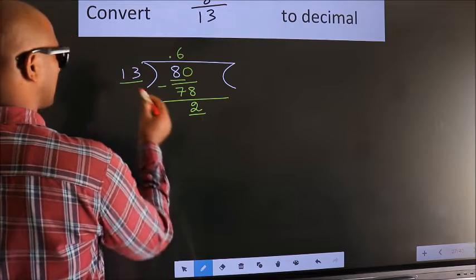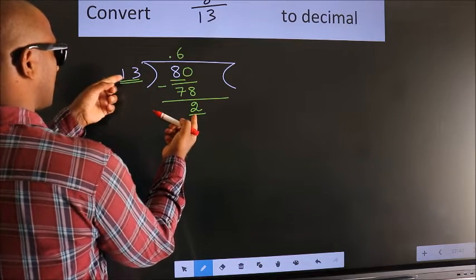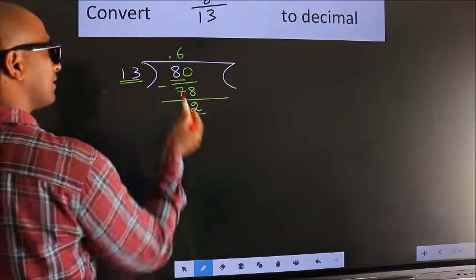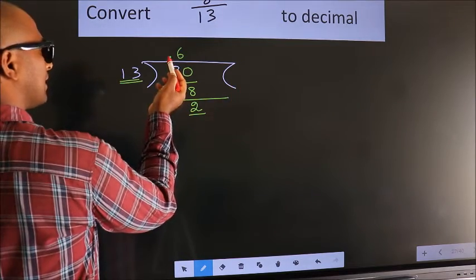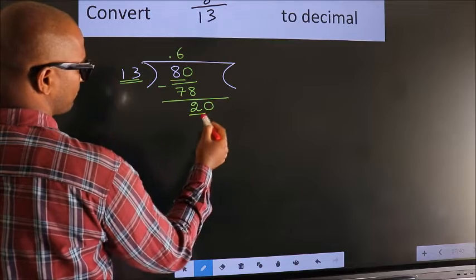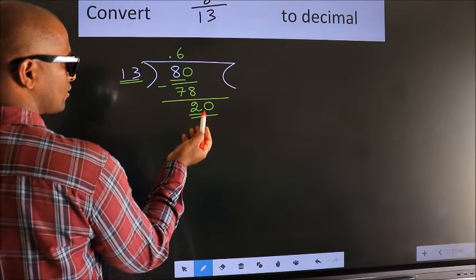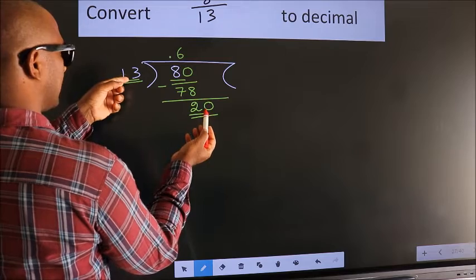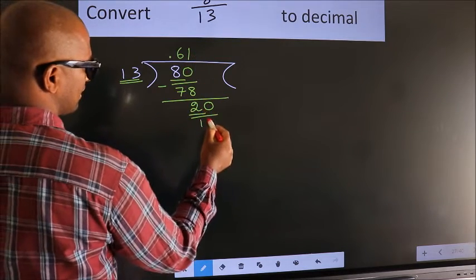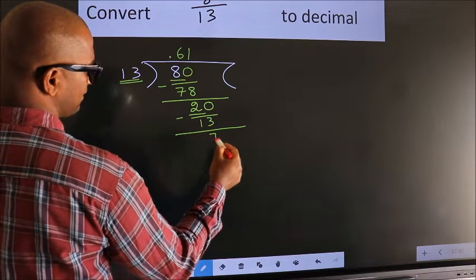Here we have 2, here 13. 2 is smaller than 13. And we already have the decimal, so we can directly take 0. So, 20. A number close to 20 in the 13 table is 13 once, which is 13. Now, we subtract. We get 7.